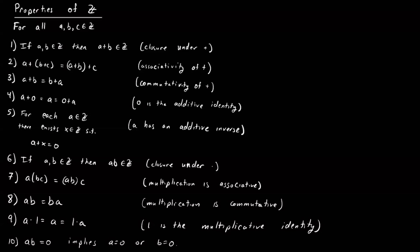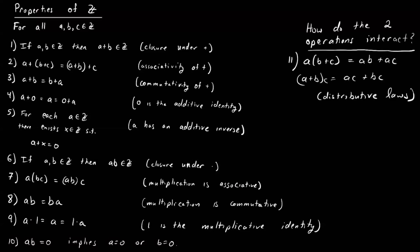Addition has its own set of properties and multiplication has its own set of properties. To talk about both operations together, we need the distributive law: a times (b plus c) equals a times b plus a times c, and (a plus b) times c equals a times c plus b times c. This tells us how our two operations interact.